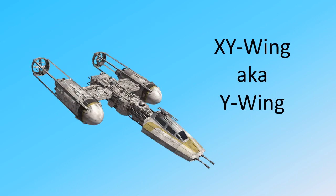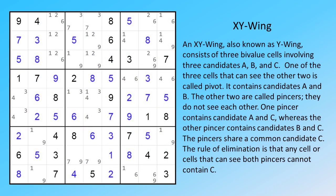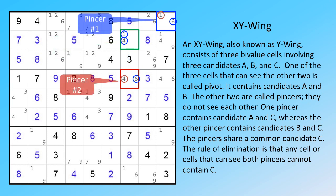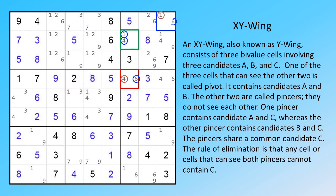X-Y Wing, also known as Y-Wing, consists of three bivalue cells involving three candidates A, B, and C. One of the three cells that can see the other two is called the pivot. It contains candidates A and B. The other two are called pincers. They do not see each other. One pincer contains candidates A and C, whereas the other pincer contains candidates B and C. The pincers share a common candidate C. The rule of elimination is that any cell or cells that can see both pincers cannot contain C.